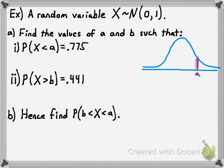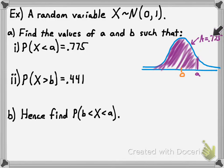So let's say that's a, and the area to the left of a is .775. We want to figure out what value a has to be if the mean is zero and the probability of a number being less than a is .775. Here's the new calculator command that we're going to write out: we're going to use the inverse normal distribution.